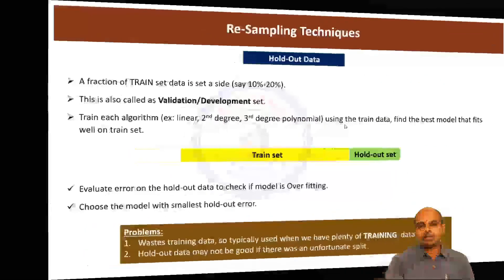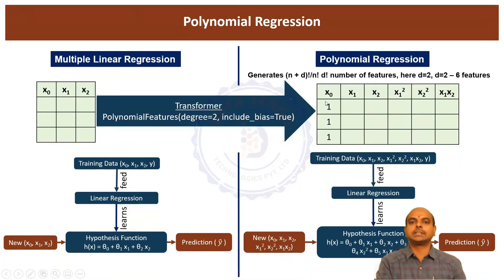We said the include bias is equal to true, so it created the x0 feature, so it created 6 features. That is about the intuition on how to do a polynomial regression, and we will see a code example. Thank you.